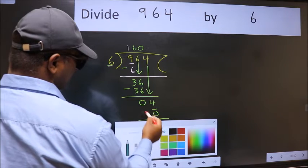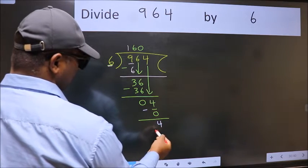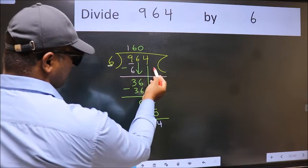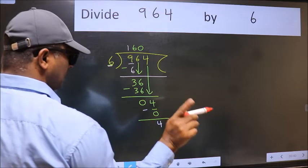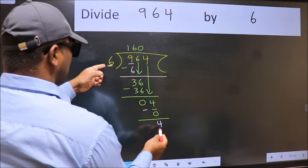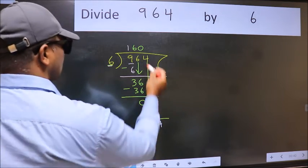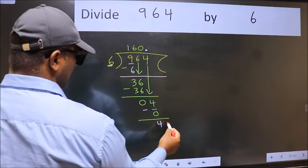Now we subtract. We get 4. Over here, we did not bring any number down, and 4 is smaller than 6. So now we can put dot and take 0.